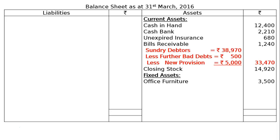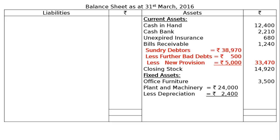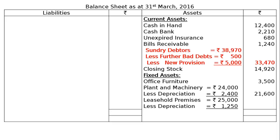Fixed assets: office furniture rupees 3,500. Plant and machinery rupees 24,000, less depreciation rupees 2,400, giving a final column figure of rupees 21,600. Leasehold premises rupees 25,000, less depreciation at 5 percent rupees 1,250, giving a final column figure of rupees 23,750. Total of the asset side is rupees 1,13,720.